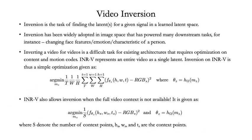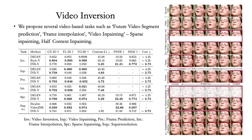Next, we show results on video inversion. In an inversion, a given signal is inverted to find its latent in a learned latent space. Inversion is widely adopted and extensively researched for images, and is used for many downstream tasks, majorly for image editing. INRV represents a complete video using a single latent; thus, inversion with INRV is a simple optimization given by the first equation. Moreover, INRV can also invert incomplete videos, done by the second equation. We make comparisons with StyleGANV, DiGAN, and VideoINR on several inversion-based tasks.